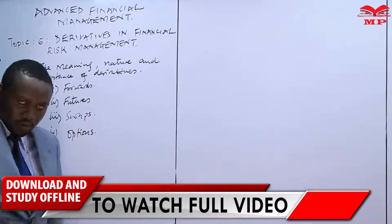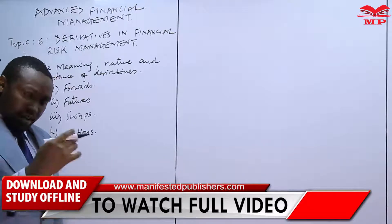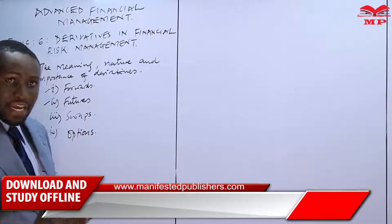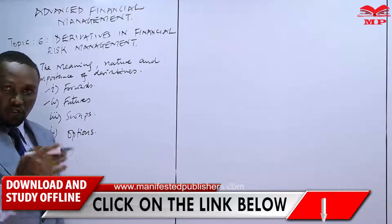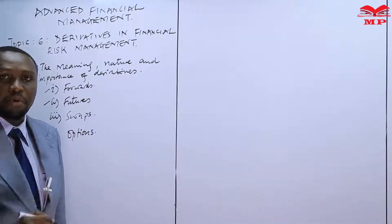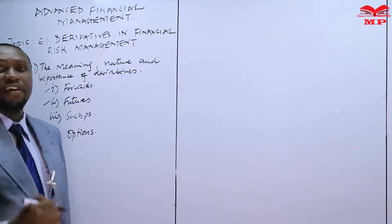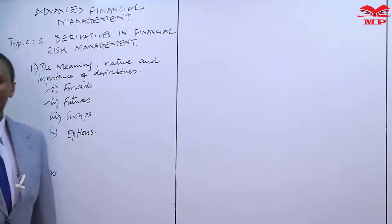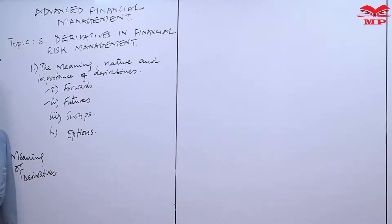A derivative is a financial instrument in which that financial instrument derives its value from another instrument or from another financial asset. This other financial asset is called the underlying. The underlying can be a share, a bond, a currency, or even a commodity. So when we talk of a derivative, we talk of a contract.